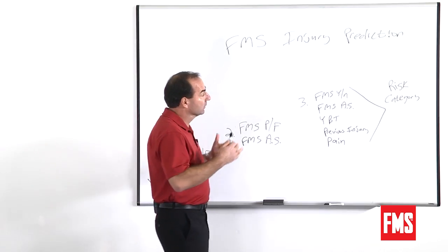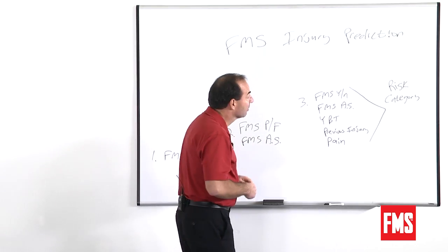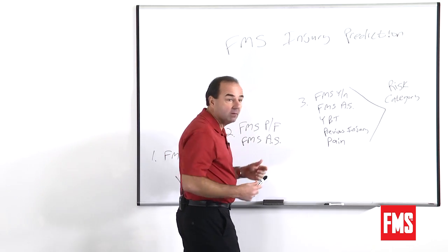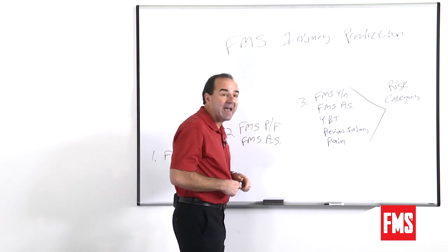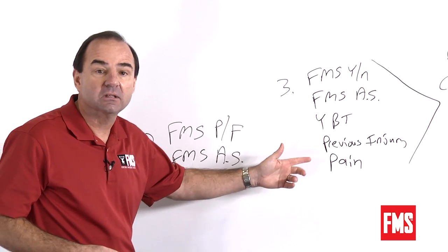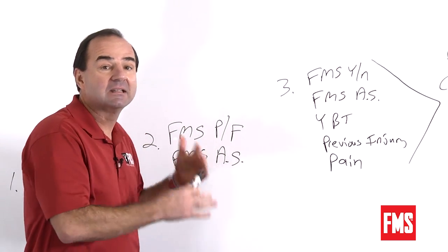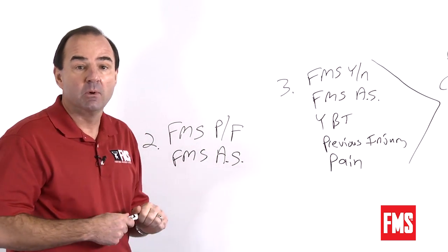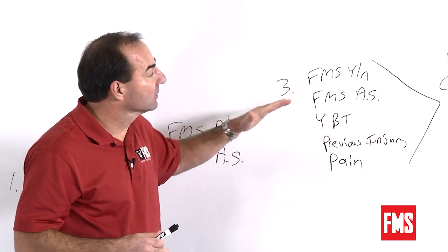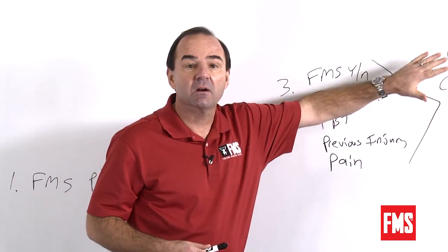So we got to a larger college study and put everything together. What we found was the FMS pass/fail, asymmetry — we added things from the Y Balance Test, and we looked at previous injury and even pain with movement. Putting those things together, we were able to say if you have multiple factors, you're in a high-risk category.